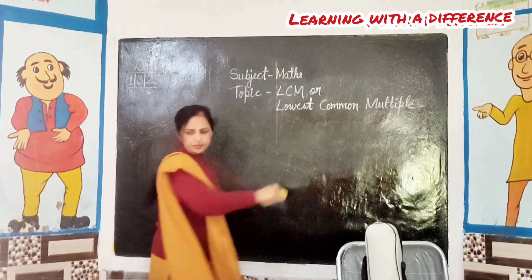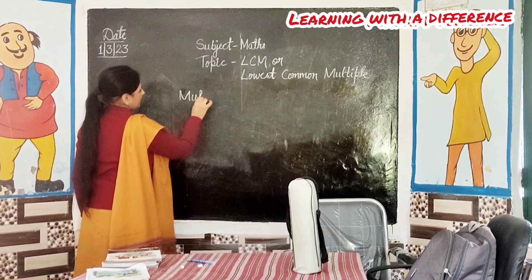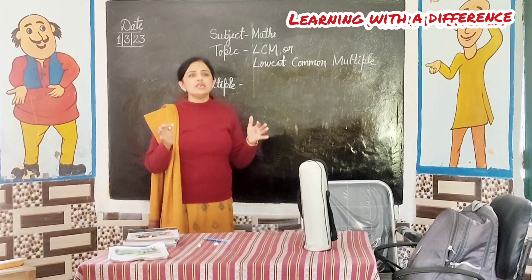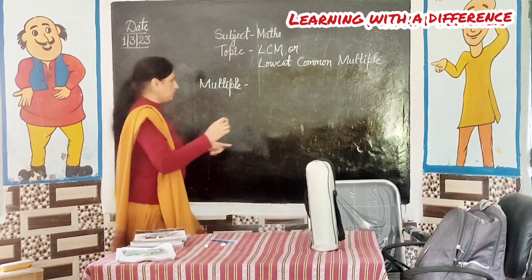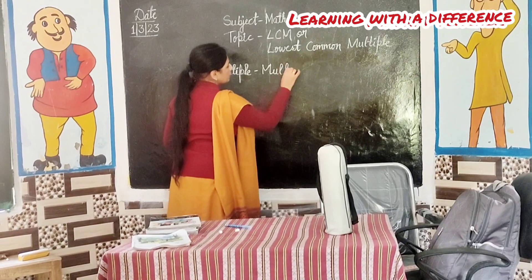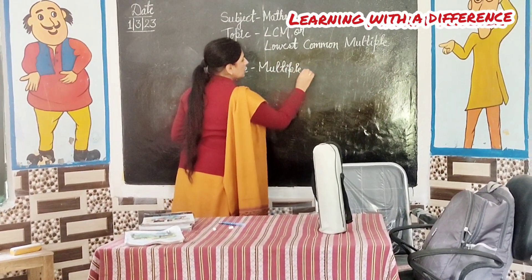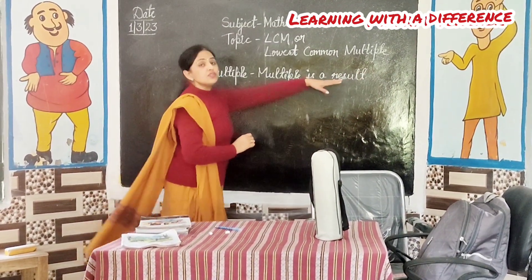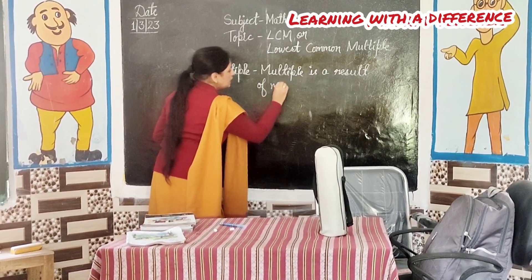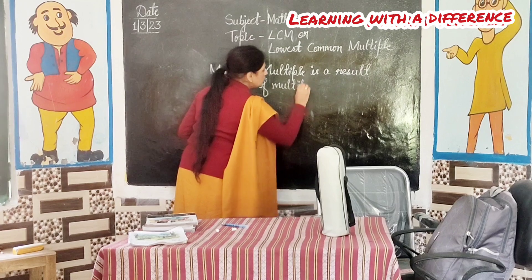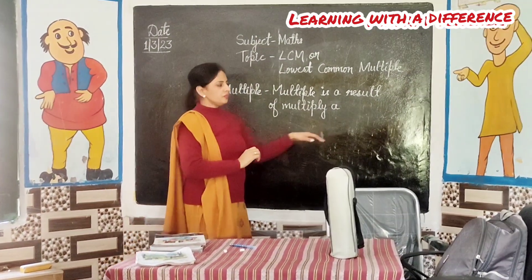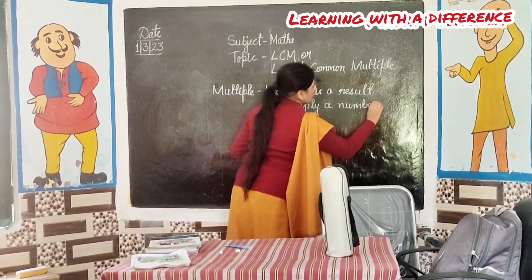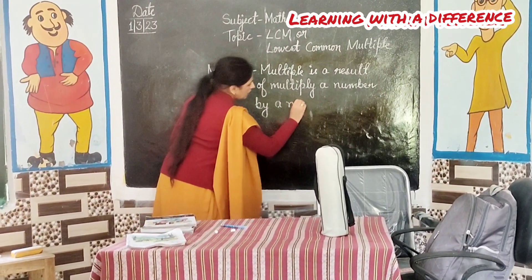Now everybody see. What is a multiple? A multiple is a result of multiplying a number by a natural number.